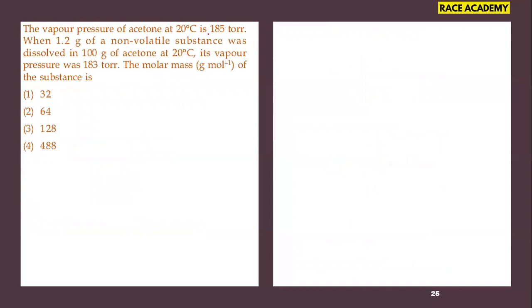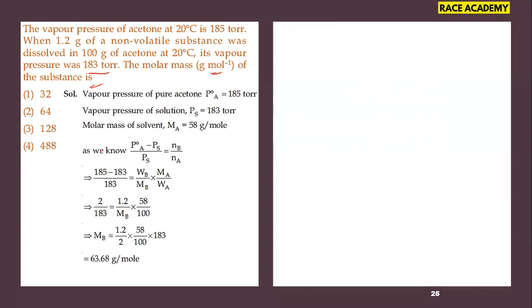The vapor pressure of a solvent at 20°C is 185 torr. When 1.2 grams of a non-volatile substance was dissolved in 100 grams of solvent at 20°C, its vapor pressure became 183 torr — meaning the vapor pressure reduced. The molar mass of the substance is to be calculated. Using Raoult's law with P₀ − P = 2, mass of non-volatile substance = 1.2 g, mass of solvent = 100 g, after simplification we get 63.68 g/mol — the second option.